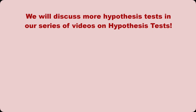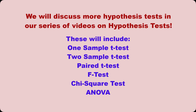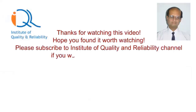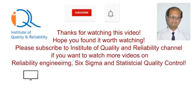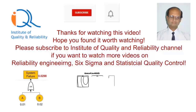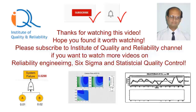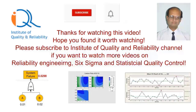We will discuss more hypothesis tests in our series of videos, including 1-sample t-test, 2-sample t-test, paired t-test, F-test, chi-squared test, and analysis of variance. Thanks for watching this video. Hope you found it worth watching. Please subscribe to the Institute of Quality and Reliability channel if you want to watch more videos on Reliability Engineering, Six Sigma, and Statistical Quality Control. Click on the subscribe and bell icon to get notified for future videos.